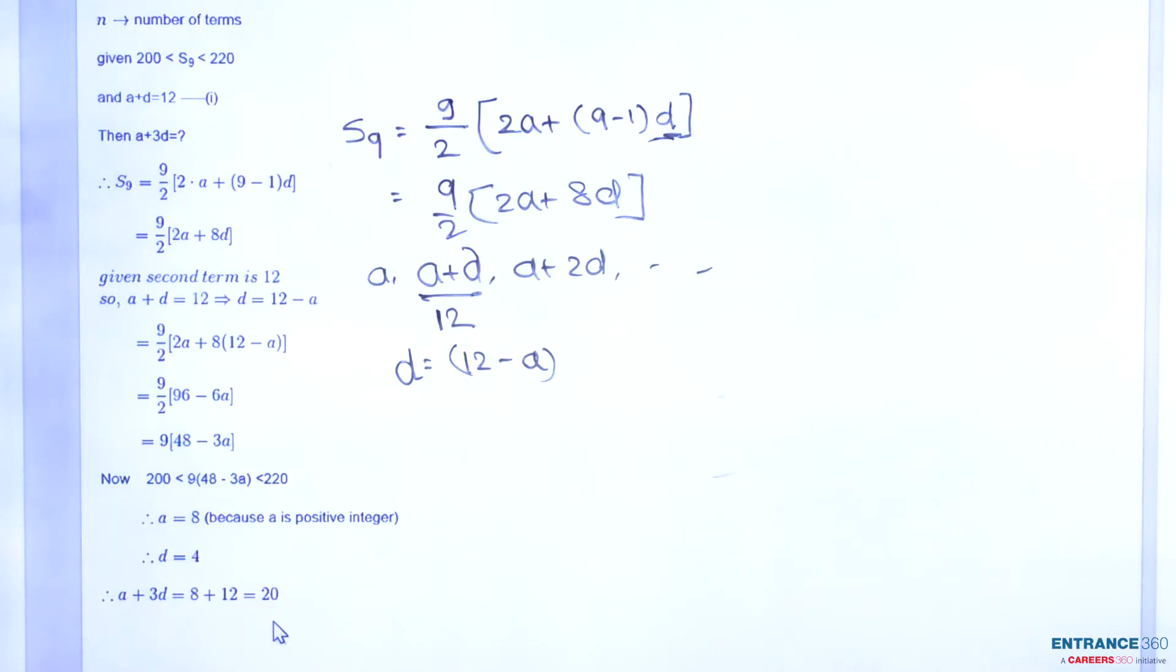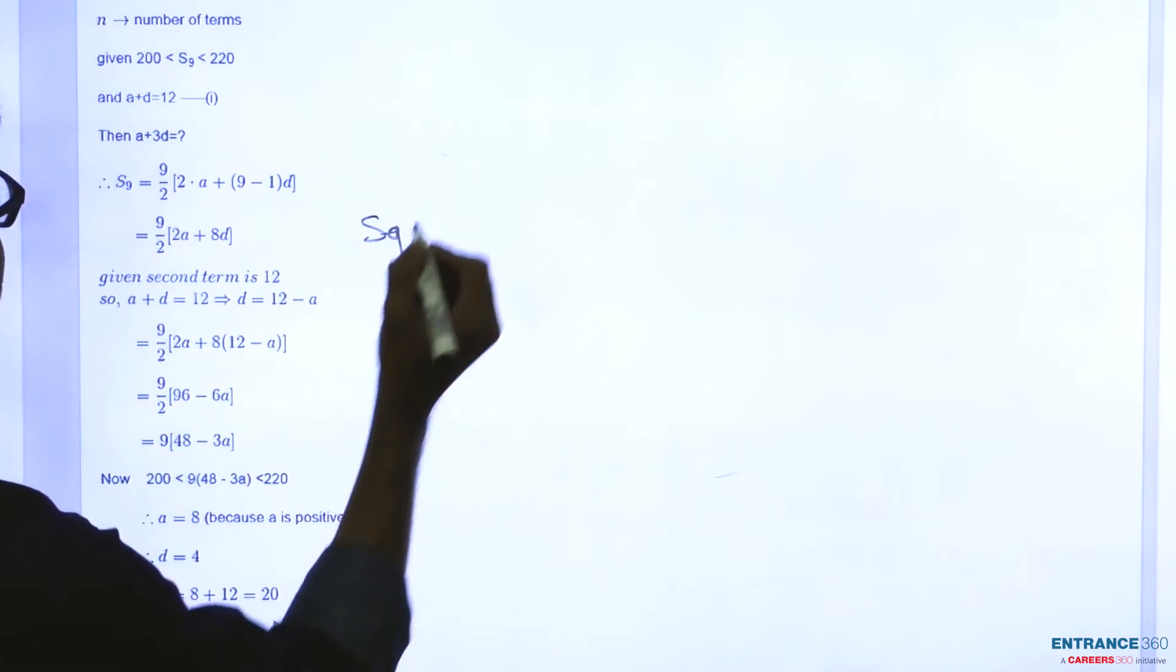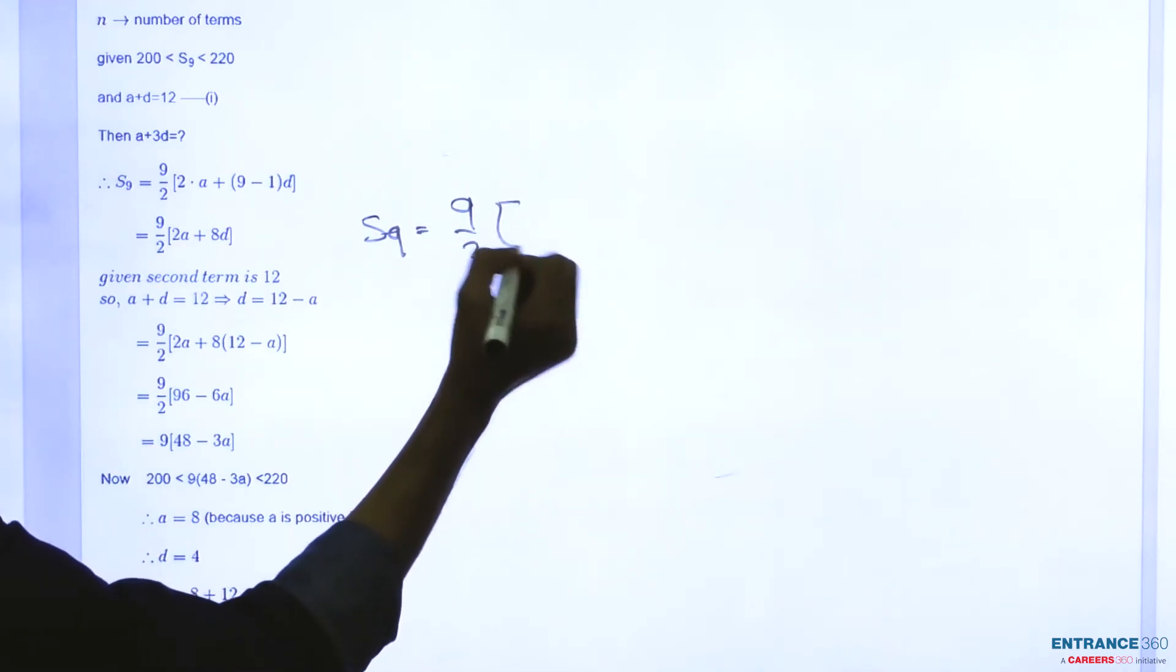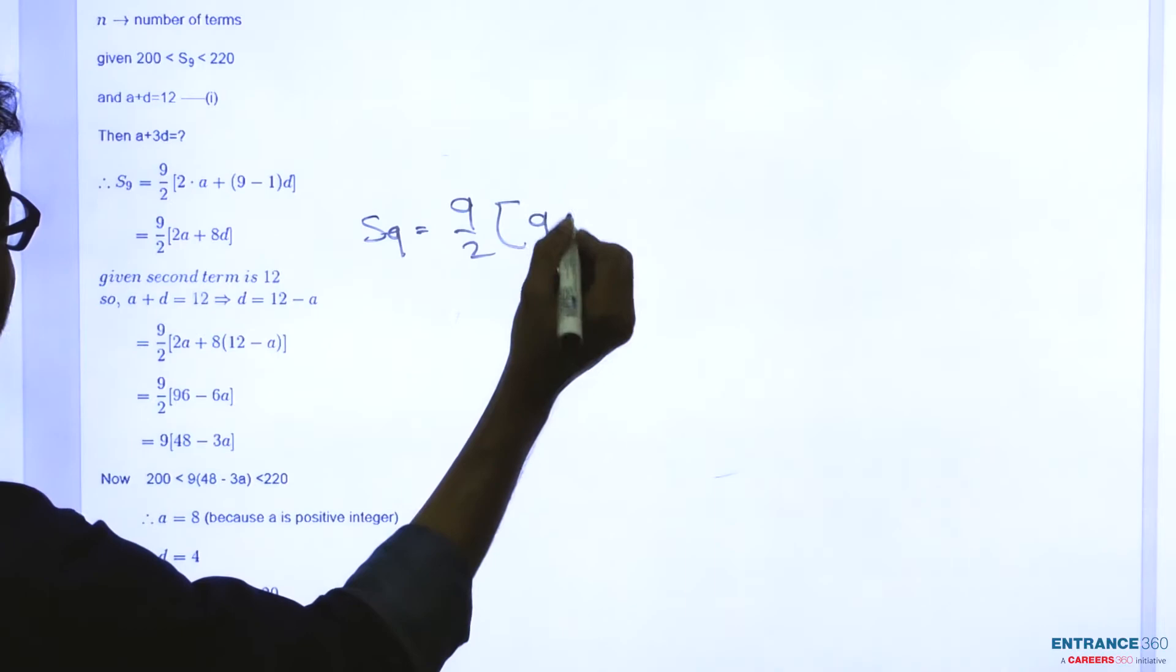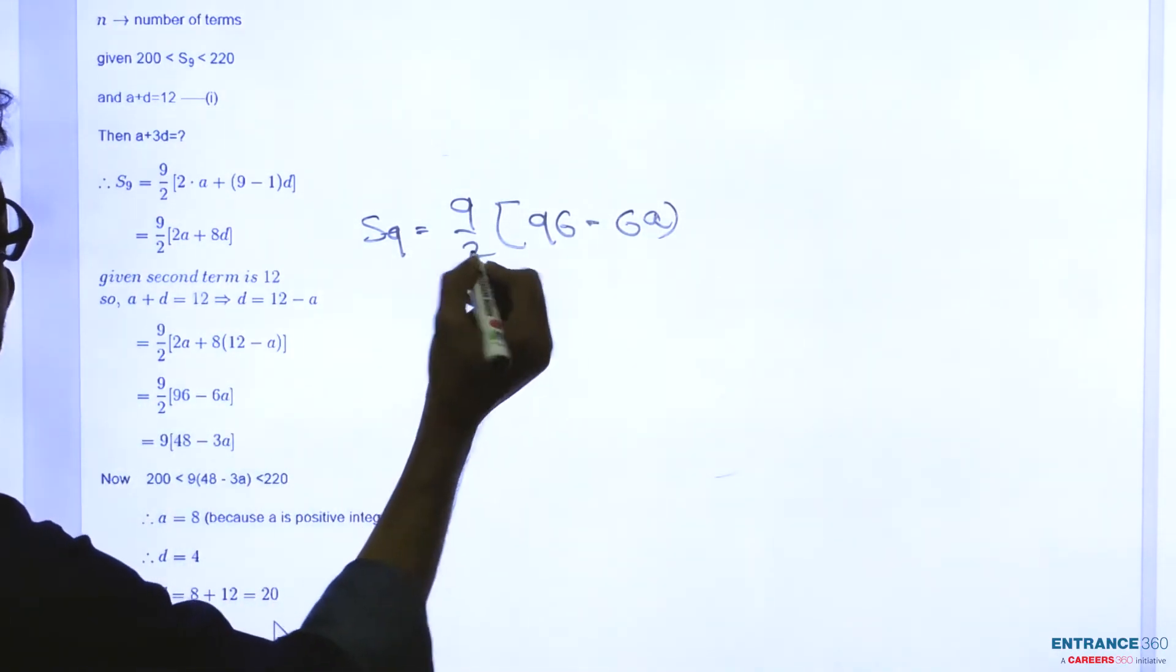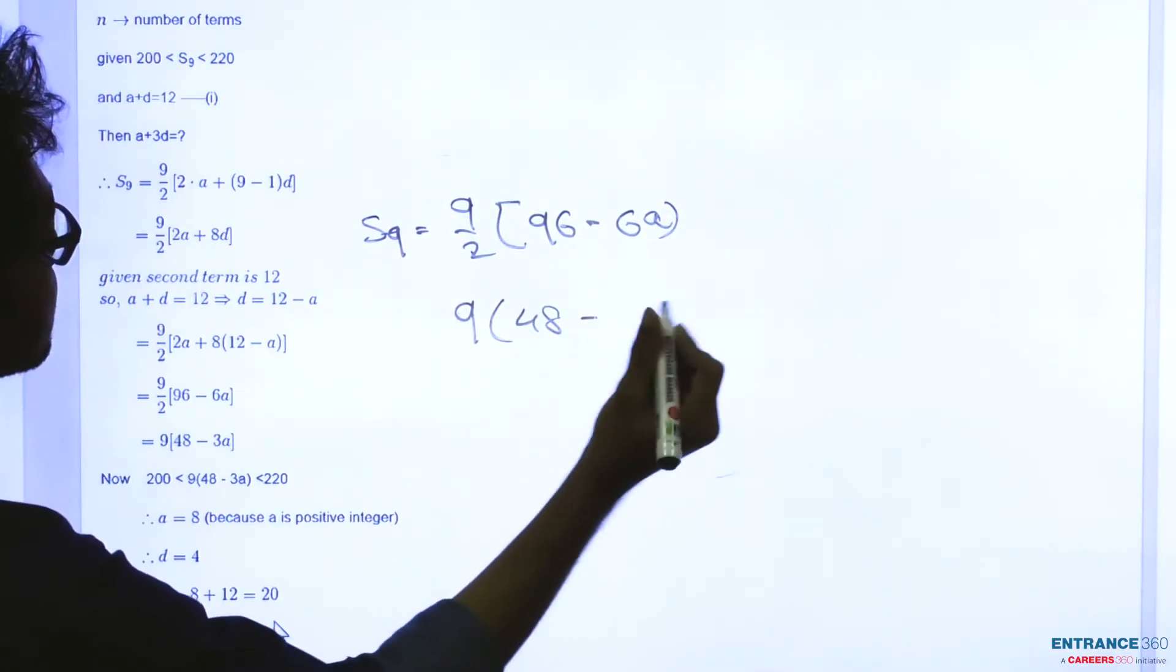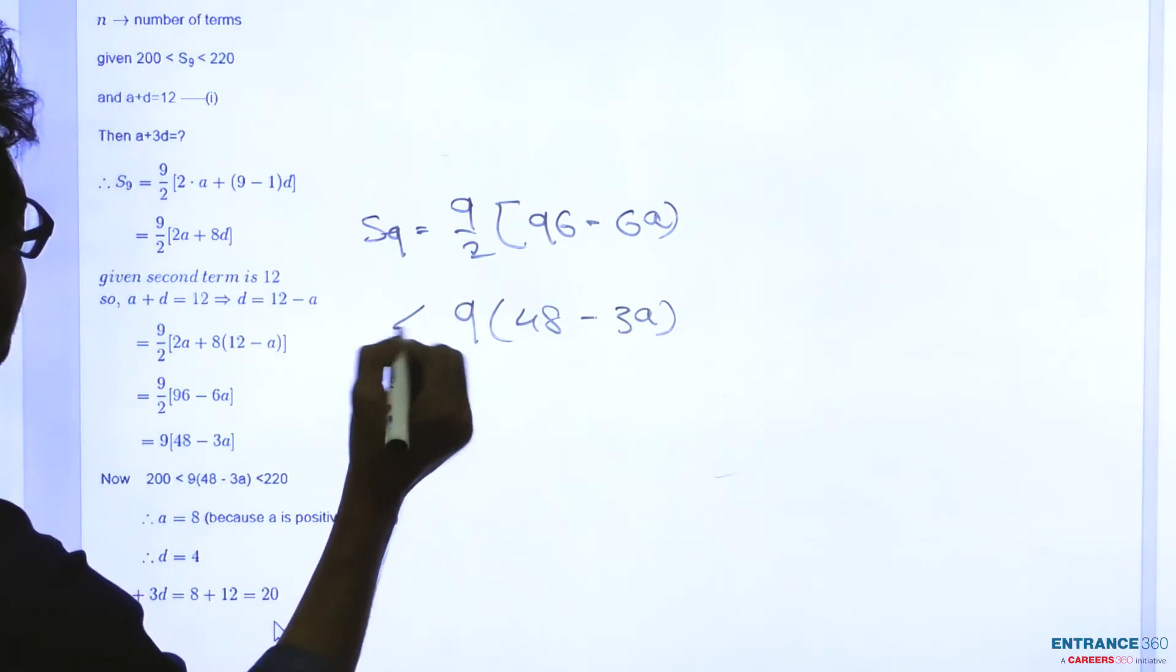Simplifying, we get S₉ = 9/2[96 - 6a]. The 2 cancels out, giving us S₉ = 9(48 - 3a).